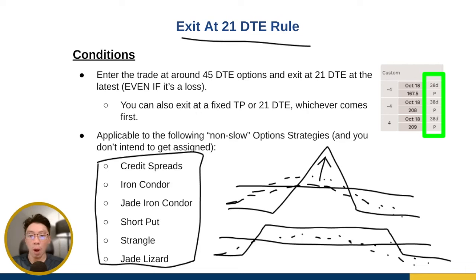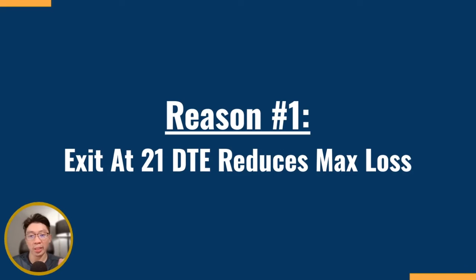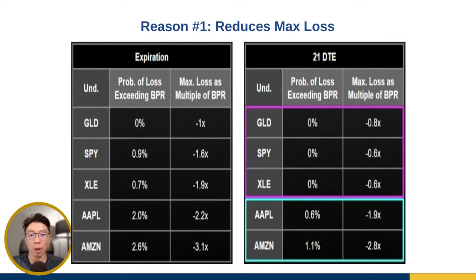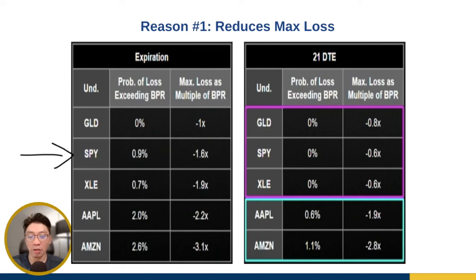Why do we want to exit at 21 DTE? There are three good reasons. The very first reason is that exiting at 21 DTE reduces your max loss. There is a study done by the Tasty Trade team where they compare the undefined risk strategy — I think it's the strangle — where they compare the probability of the loss exceeding the buying power requirement, or BPR, at expiration versus at 21 DTE. If you look at SPY, if you hold to expiration, there's roughly a 1% probability of your loss exceeding the BPR.